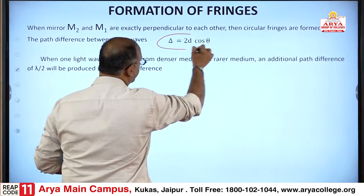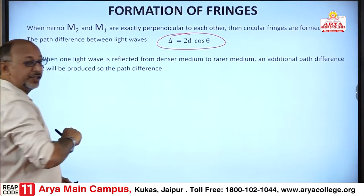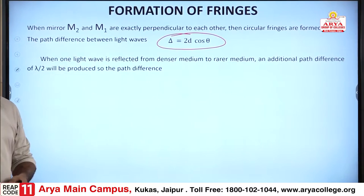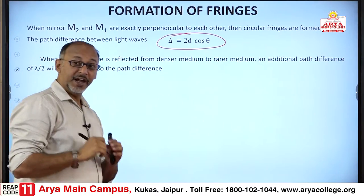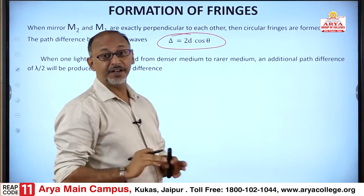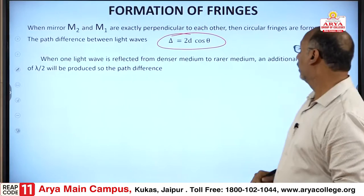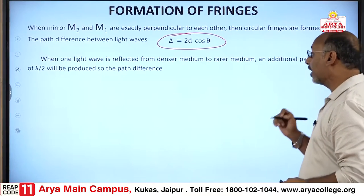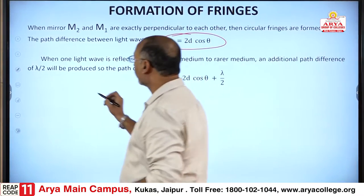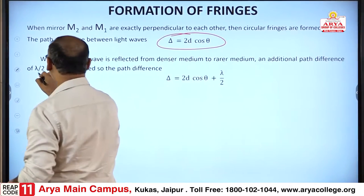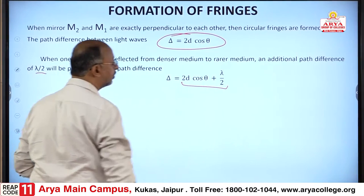In the previous lecture, we also saw that 2D cosθ is generated in the path difference. But here, because light waves travel from a denser to a rarer medium, for this reason a path difference of λ/2 is also produced, so we write the total path difference as 2D cosθ + λ/2.